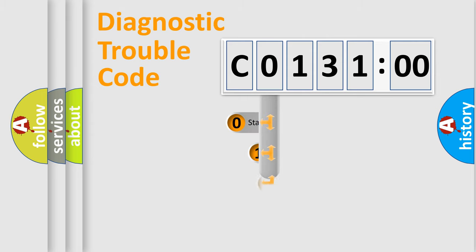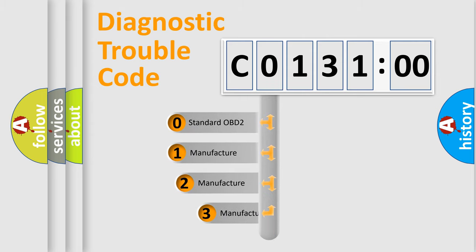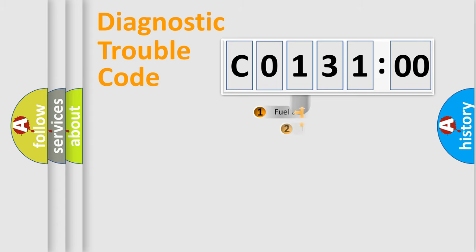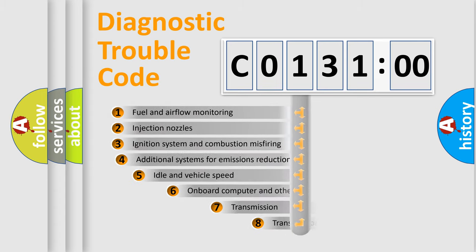This distribution is defined in the first character code. If the second character is expressed as 0, it is a standardized error. In the case of numbers 1, 2, 3, it is a manufacturer-specific expression of the car-specific error.